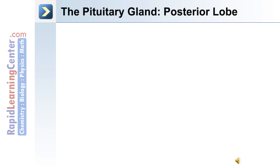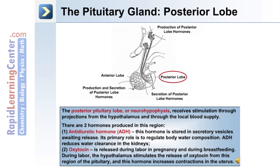The posterior lobe, or neurohypophysis, receives stimulation through projections from the hypothalamus and through the local blood supply. There are two hormones produced by the posterior lobe: antidiuretic hormone and oxytocin.